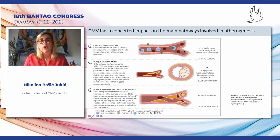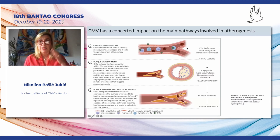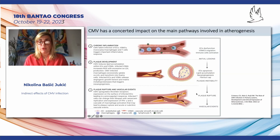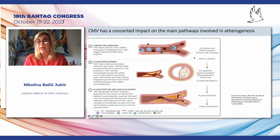So CMV may have a concerted impact on the main pathways involved in atherosclerosis. First, on chronic inflammation: CMV may cause endothelial cell dysfunction, vascular smooth muscle cell migration, and it may activate immune cells, clearly acting on the first process of atherosclerosis. In the next step of plaque development, CMV induces lipid accumulation within endothelial cells and vascular smooth muscle cells, leading to neoangiogenesis and fibrous cap formation. This can also influence plaque rupture by upregulating thrombin receptors on the surface of affected endothelial cells, leading to a procoagulant response.